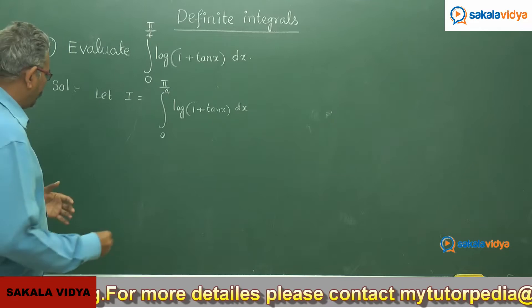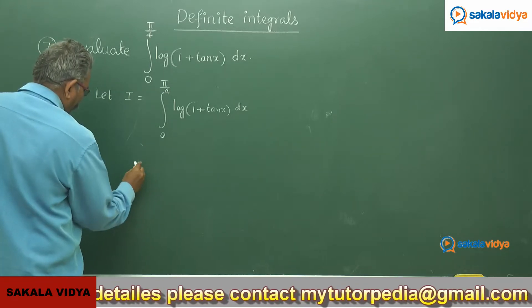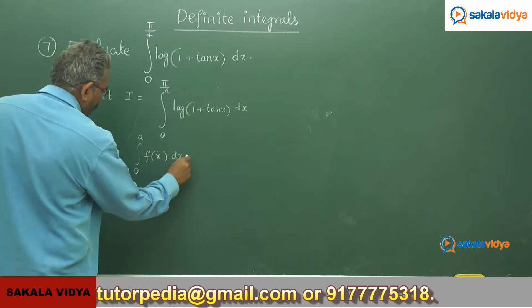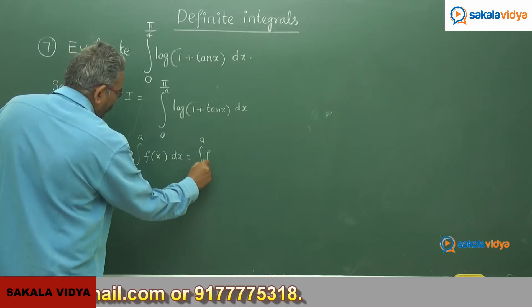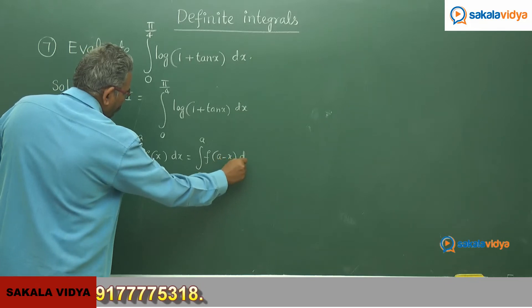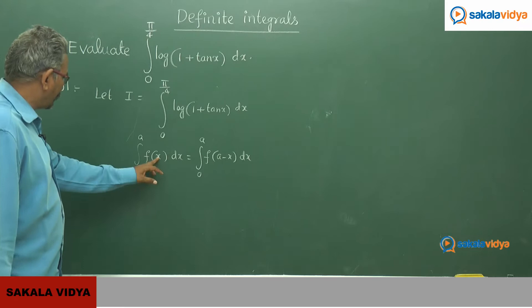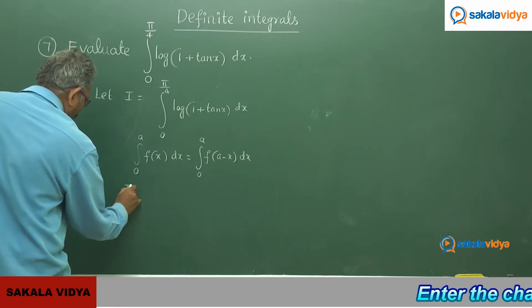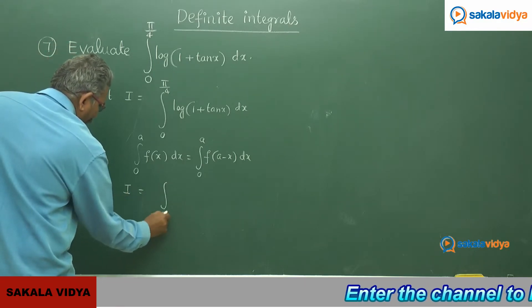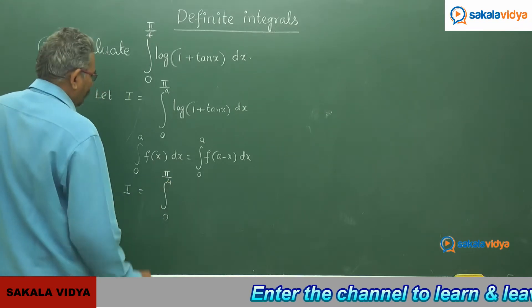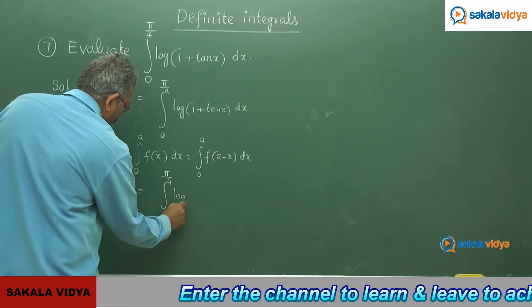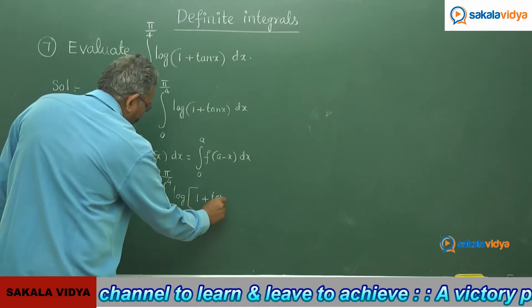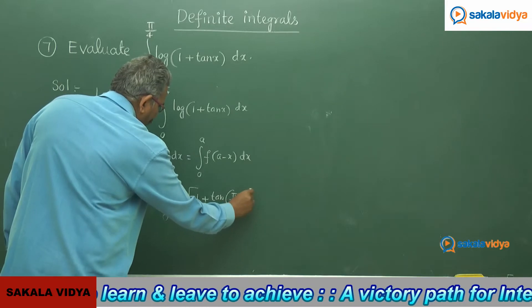Now, let us apply the property: integral 0 to a of f(x) dx is equal to integral 0 to a of f(a minus x) dx. That means here x is replaced by a minus x. So now this becomes i equals to integral 0 to pi by 4 of log(1 + tan(pi/4 minus x)) dx.